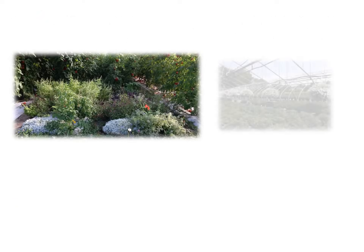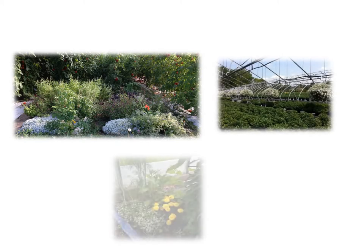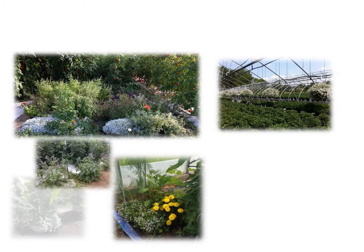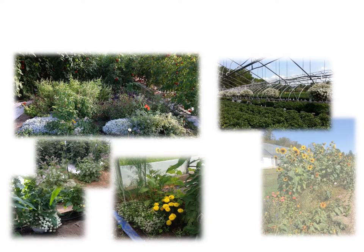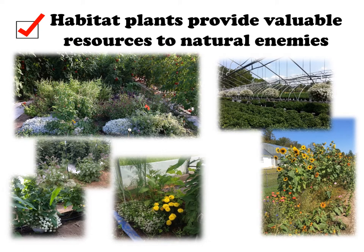Habitat plants are plantings of pollen-producing flowers that are highly attractive to beneficial insects. These plants provide food in the forms of pollen, nectar, or attracted pests. They also provide shelter, resting places, and sites to lay eggs and reproduce.